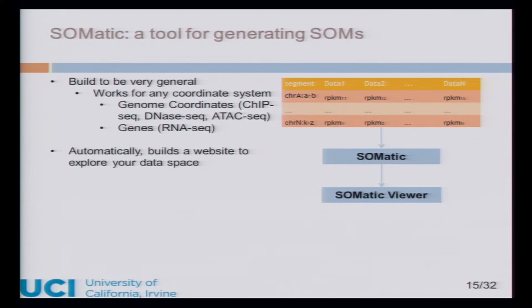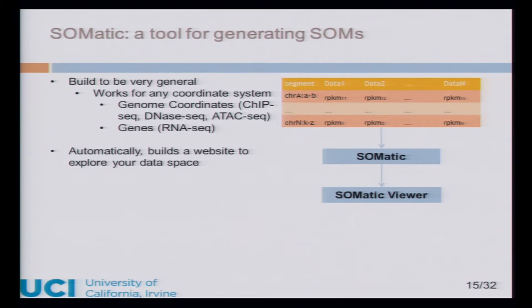To let people make their own self-organizing maps, I created a tool called Somatic. It's built to be very general — it'll work for any coordinate system you put into it, whether you've got genes, microRNA, microarrays, or whatever, and you can put it into the first column and it will just work. I also built the tool to be hackable: all the output files are accessible, so if you want to make a script to throw your own overlays on top or make custom maps, that's all supported. Additionally, it'll automatically build a website so you can view your maps visually instead of combing through reams of data like with any other SOM tool.